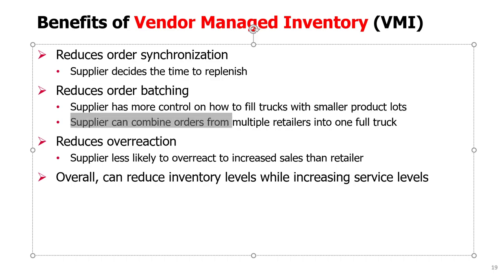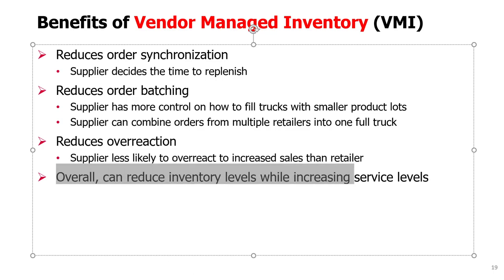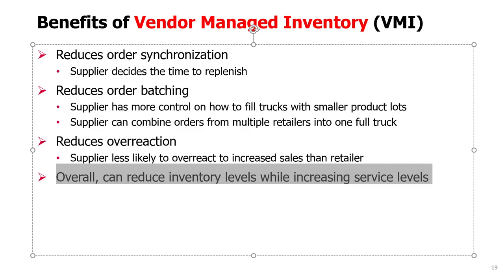A supplier can also combine orders from multiple retailers into one truck when two or more retailers are located near each other, improving economies of scale while still delivering smaller-than-full-truck-load quantities to each retailer. VMI also reduces overreaction — the supplier is less likely to overreact to increased sales than a retailer, partly because they have better visibility across many retailers. Overall, the biggest benefit is that VMI can reduce inventory levels in general while simultaneously increasing service levels, measured by in-stock probability or fill rate.